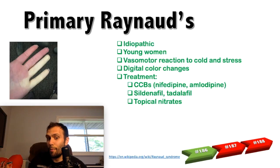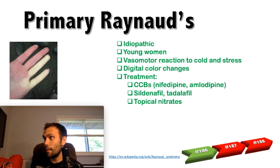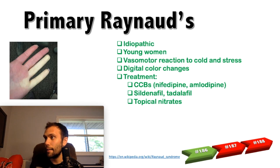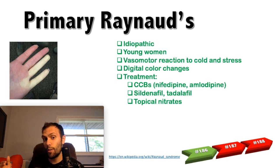To treat Raynaud's, because of the vasoconstriction, you use vasodilators — calcium channel blockers are first-line, and phosphodiesterase 5 inhibitors like sildenafil and tadalafil, which prevent degradation of cGMP and increase nitric oxide to cause vasodilation. Remember the distinction: cilostazol is PDE3 and increases cAMP, while sildenafil/tadalafil are PDE5 and increase cGMP. Calcium channel blockers are more first-line in Raynaud's, whereas in Buerger's disease, the focus on a board question is smoking cessation.